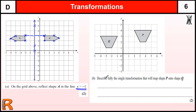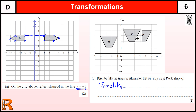In part B we've got to describe a single transformation that maps P onto Q. Now Q is the same size as P, the same orientation, same way up. It's not been spun around, it's not been reflected. So if it's the same way up and the same size, that's what we call a translation, because all that's happened is it's been slid from this position across to this position.